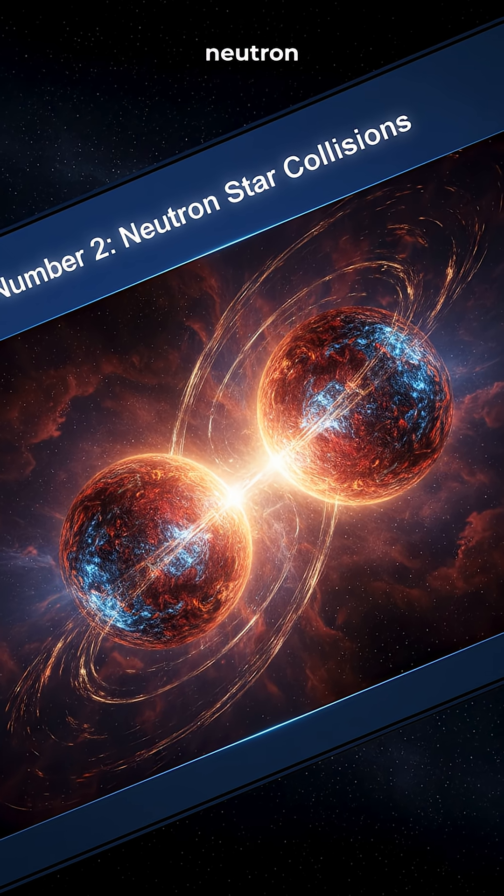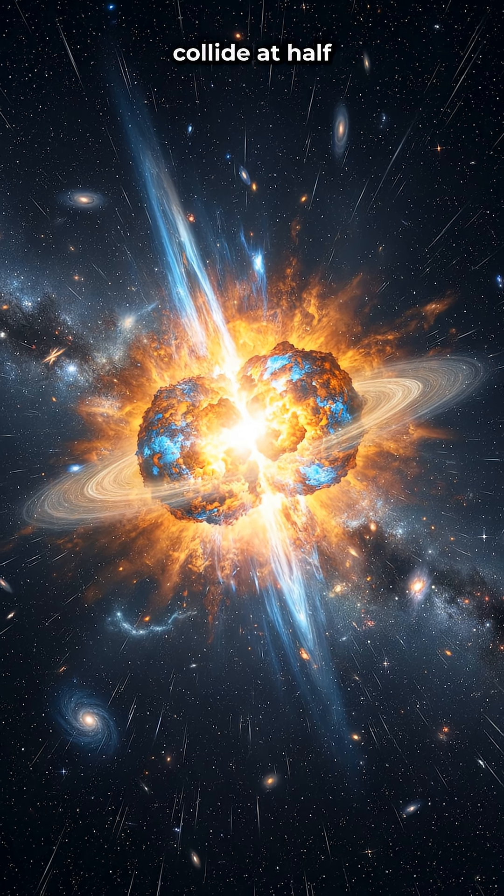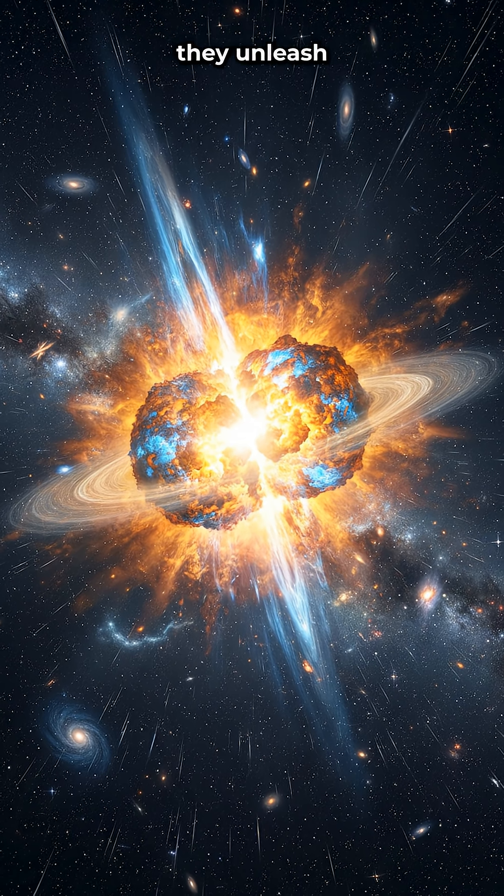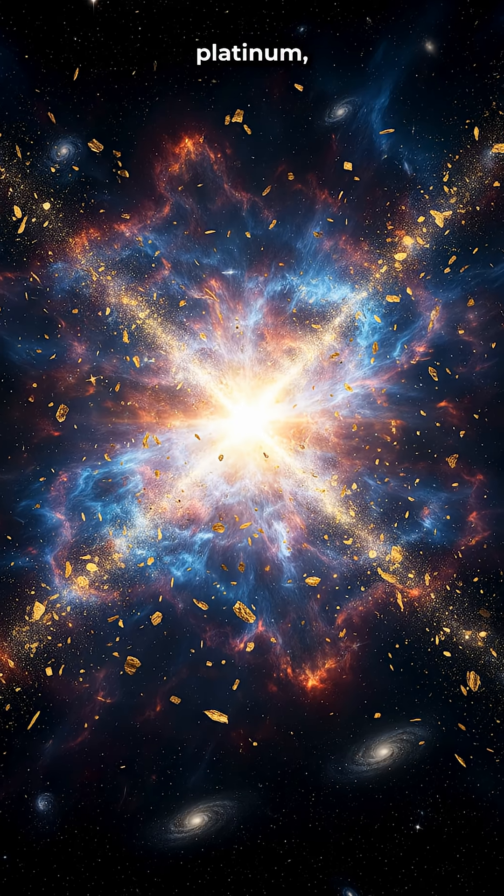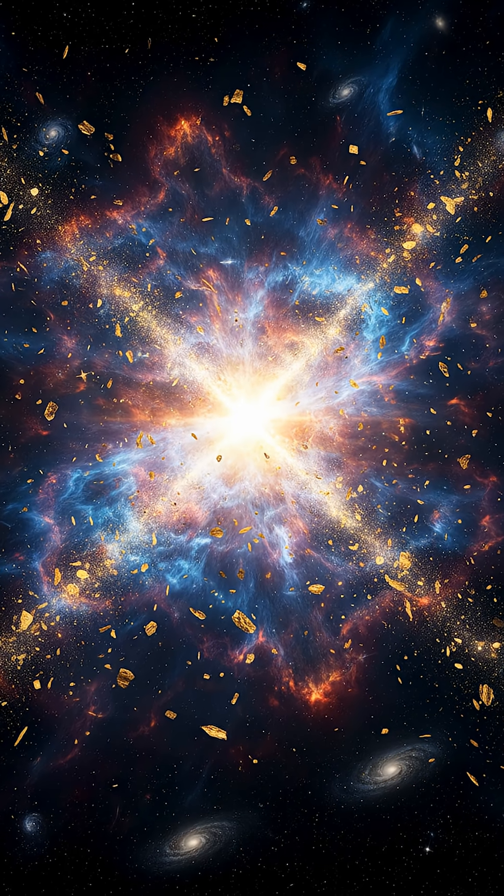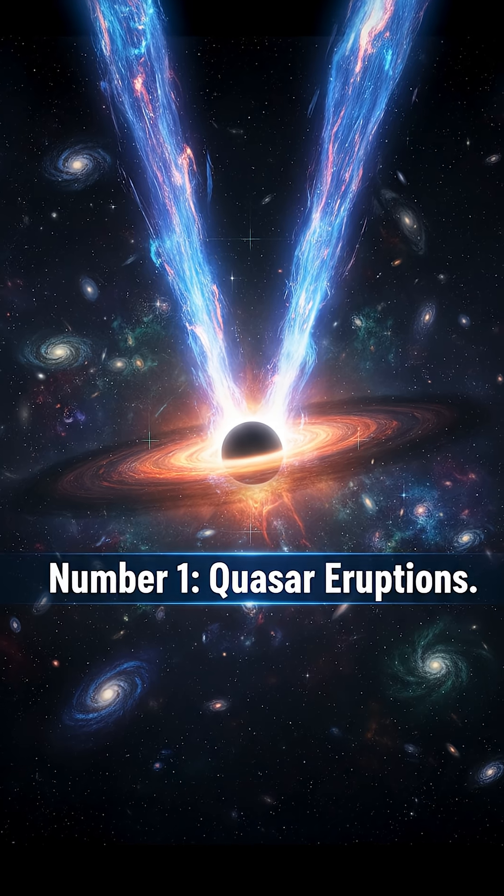Number 2: Neutron Star Collisions. When two dead stars collide at half the speed of light, they unleash a kilonova, creating all the gold, platinum, and uranium in the universe. Your jewelry? Made in an explosion like this. Number 1.